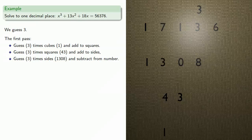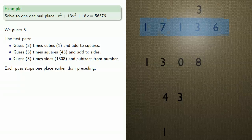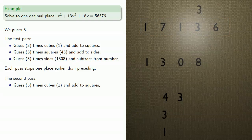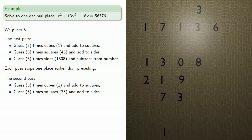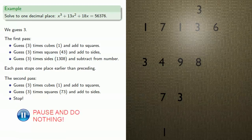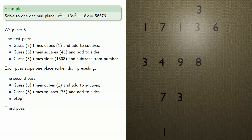At this point we have to make multiple passes, and the important idea is that each pass stops one place earlier than the preceding pass. Our first pass went all the way up to the number. So our second pass will have guess times cubes and add to squares, then guess times squares and add to sides, and stop. Then a third pass: guess times cubes and add to squares, and stop.